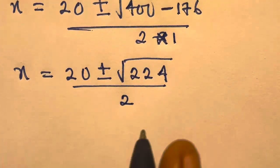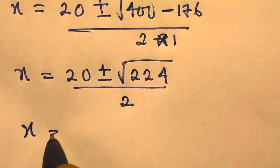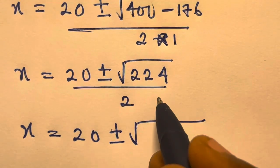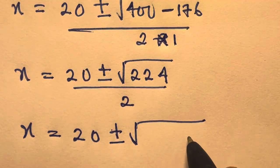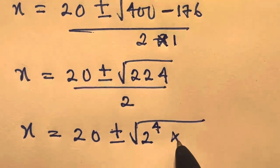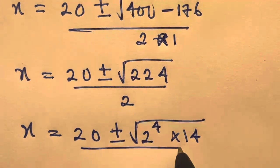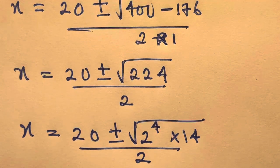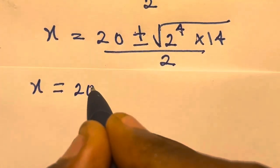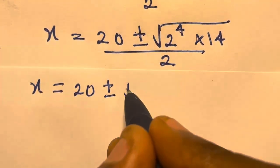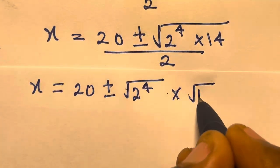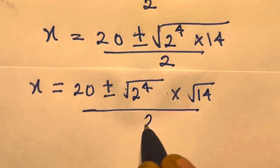And if we look at this, we have x equals 20 plus or minus the square root of 224. Now, 224 can be expressed as 16 times 14, and 16 can be expressed as 2 raised to the power of 4, times 14 here, divided by 2. So we distribute the square root to both, giving 2 raised to the power of 4 times square root of 14, divided by 2.